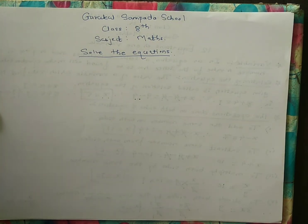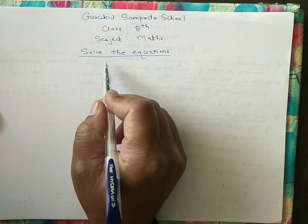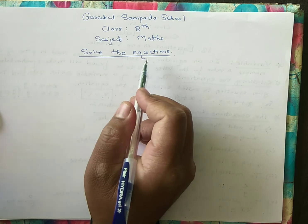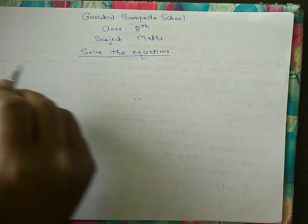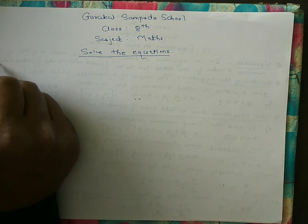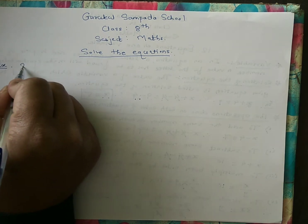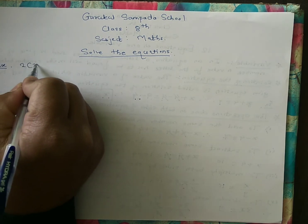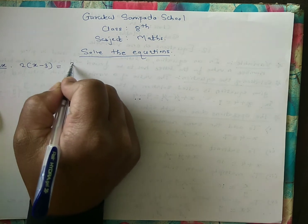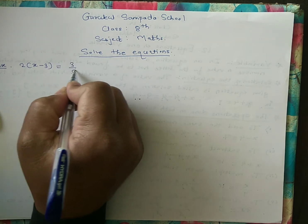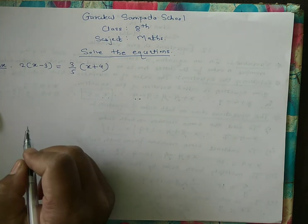Welcome back to my session. Today we are going to study how to solve equations. Let us consider an example given in the book: 2 into (x minus 3) is equal to 3 upon 5 by (x plus 4).